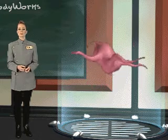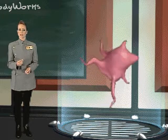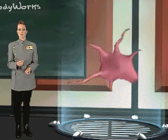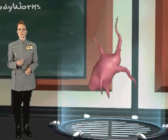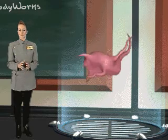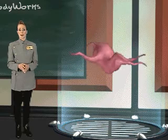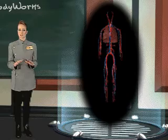Blood plasma transforms into insoluble thread-like strands of protein that mesh around the blood cells, forming a solid clot, thus creating a scaffold in which the body can build new tissue.